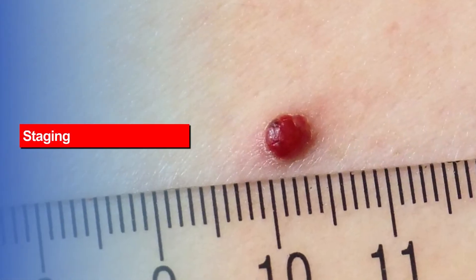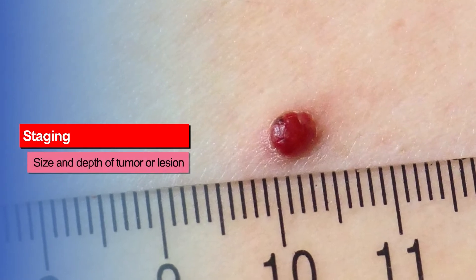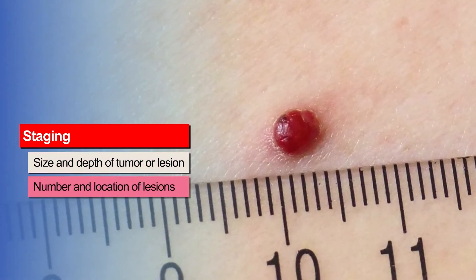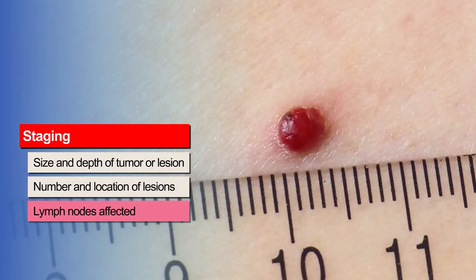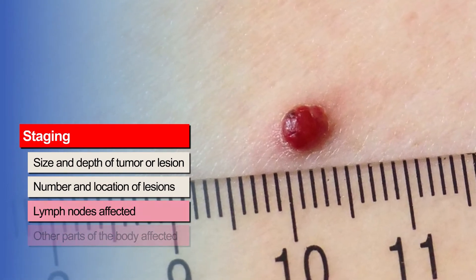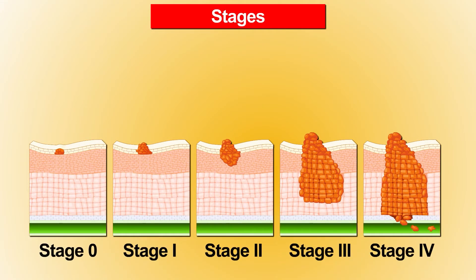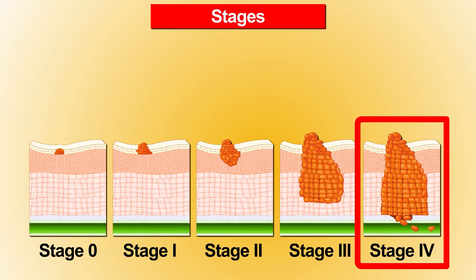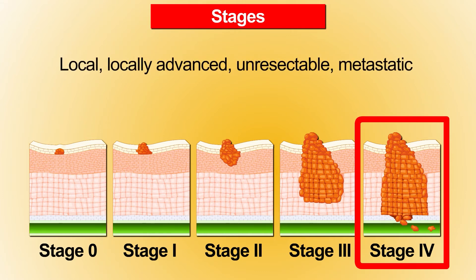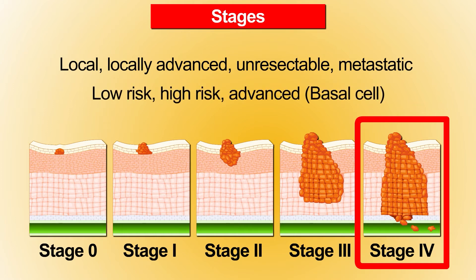Staging is a key part of diagnosis. Your doctor will look at the size, depth, number, and location of the tumors, and will also see if the cancer has spread to the lymph nodes or other parts of the body. Skin cancer stages range from zero to four. Stage four is advanced or metastatic. Your doctor may use words like local, locally advanced, unresectable — meaning it can't be removed surgically — or metastatic, to describe the stage. Basal cell carcinoma is sometimes described as low-risk, high-risk, or advanced.